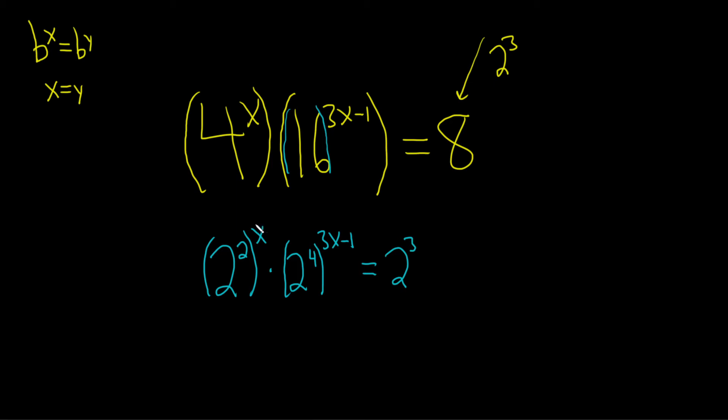Let's go ahead and multiply using properties of exponents. This is 2x, so 2 to the 2x, times 2. Then here you have to distribute, because you're multiplying the 4 by 3x minus 1.